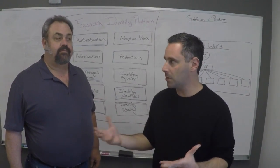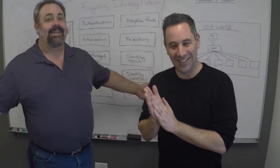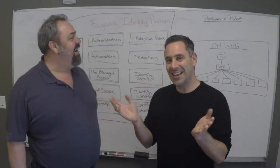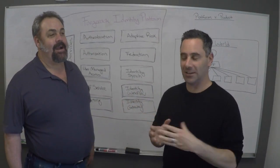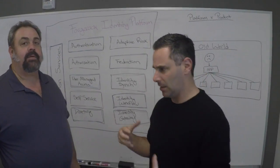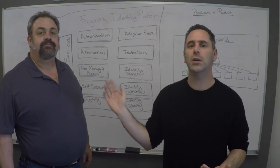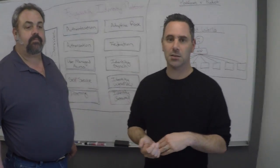If you think about where identity came from, it evolved in a component product architecture. It started with directories, then went to web access management, then federation, then identity management, then role management. Before you knew it, you had 22 different products with 22 different APIs, UIs, and different ways of doing things.